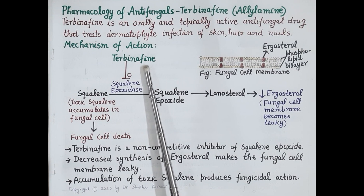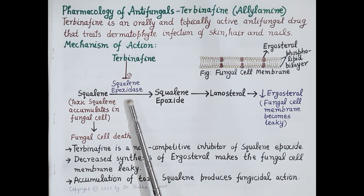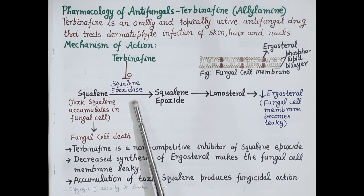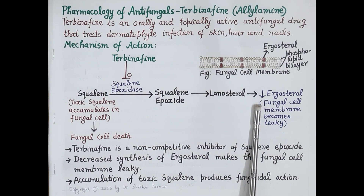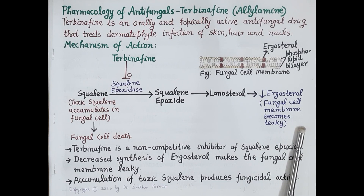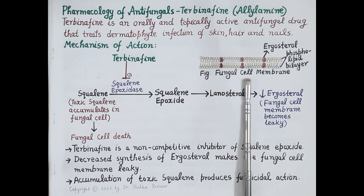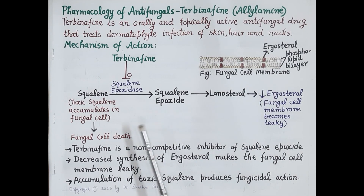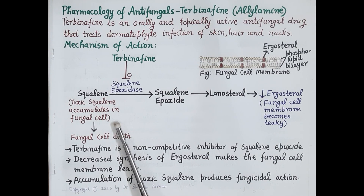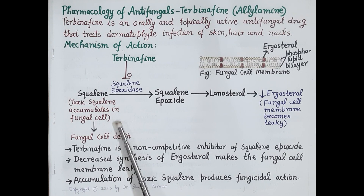Terbinafine is a non-competitive inhibitor of the enzyme squalene epoxidase. Inhibition of this enzyme by terbinafine causes reduced synthesis of ergosterol, so decreased synthesis of ergosterol makes the fungal cell membrane leaky — the permeability of the fungal cell increases. In addition to this, as squalene is not utilized, it accumulates in the cell, and this squalene is toxic. Accumulation of toxic squalene in the fungal cell causes death of the fungal cell, producing fungicidal action.